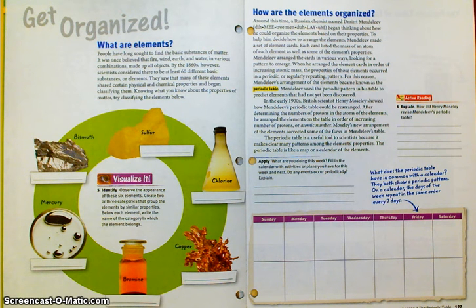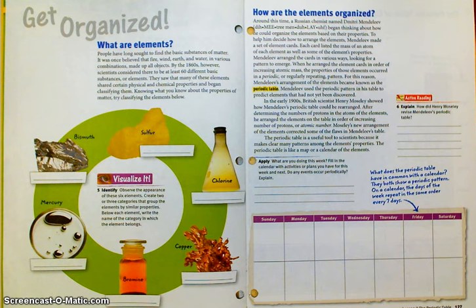Knowing what you know about the properties of matter, try to classify the elements below. We have sulfur, chlorine, copper, bromine, mercury, and bismuth. You can do this yourself. A couple of suggestions: you can categorize them — are they metals versus non-metals? Maybe are they solids versus liquids versus gases? That kind of thing.